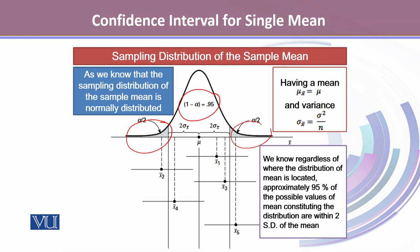We know that regardless of where the distribution of the mean is located, approximately 95% of observations fall within 2 standard deviations.